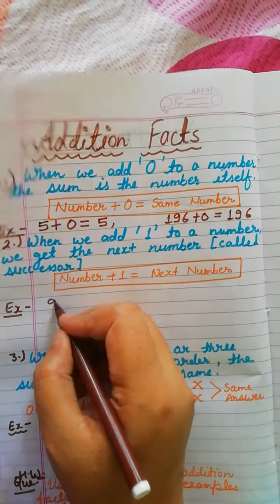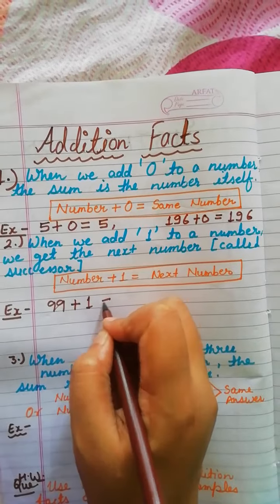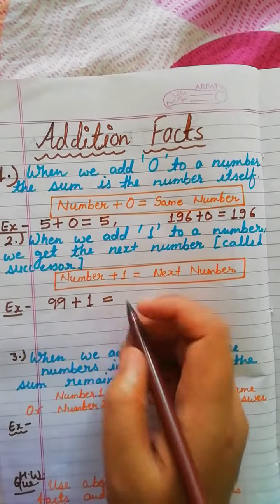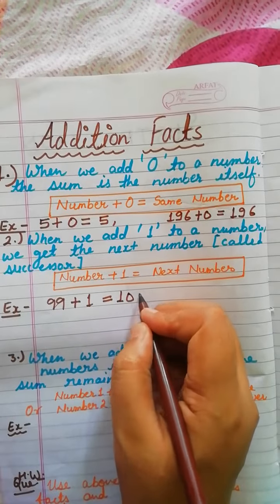For example, we have 99 plus 1. We are adding 1, so after 99, which number is coming? That is 100.